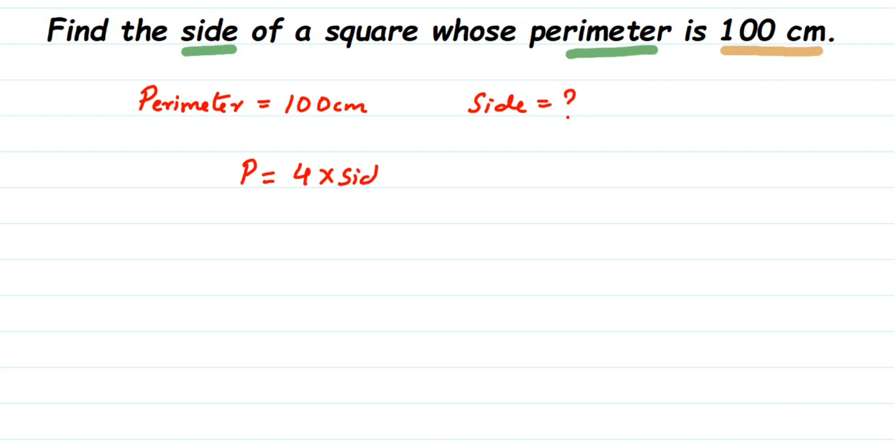We're going to substitute the value here. We know P, P is 100, so 100 is equal to 4 into side. Now we have to find out only the side value here.